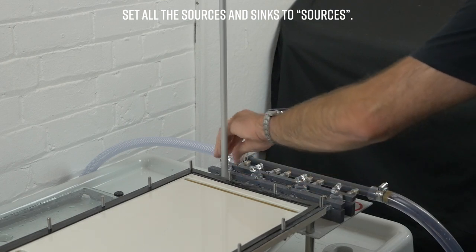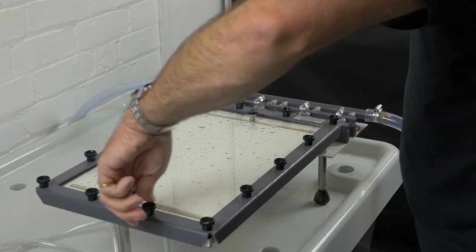Turn the valves to set all the source and sink points to the source function and re-secure the glass sheet and top plate.